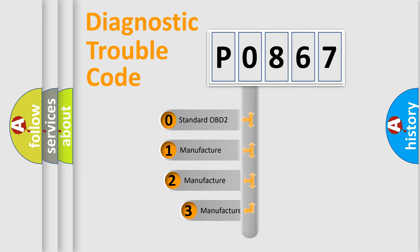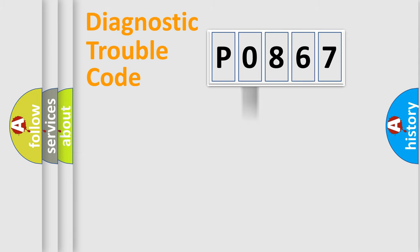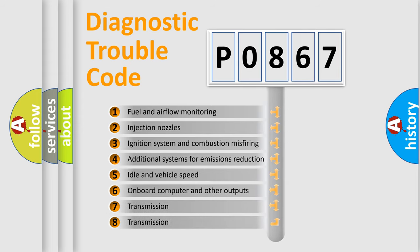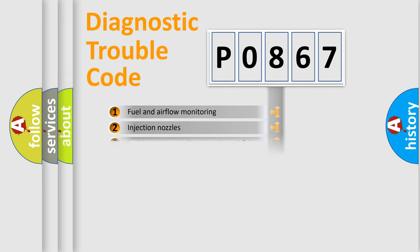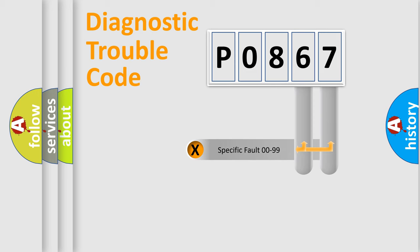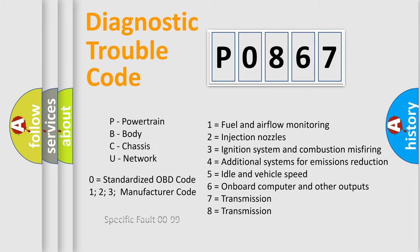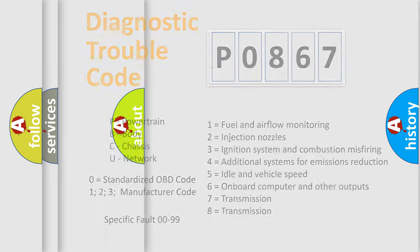If the second character is expressed as zero, it is a standardized error. In the case of numbers 1, 2, or 3, it is a more manufacturer-specific expression of the error. The third character specifies a subset of errors. This distribution is valid only for the standardized DTC code, where only the last two characters define the specific fault of the group. This division is valid only if the second character is expressed by the number zero.